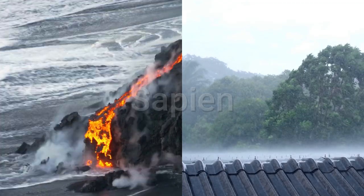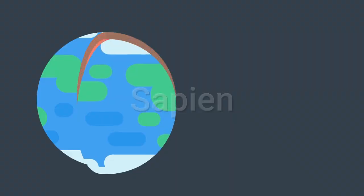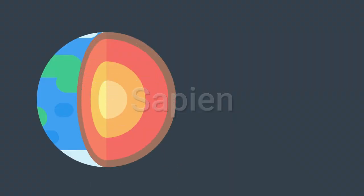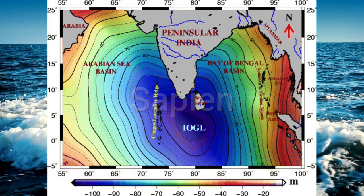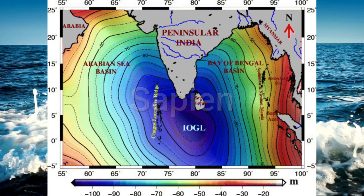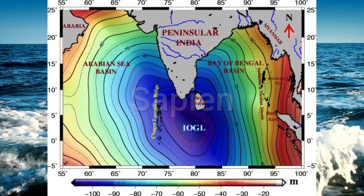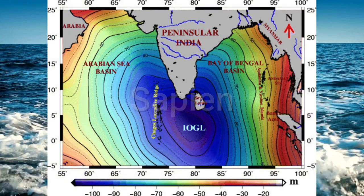From ancient oceans to modern day climate, from the planet's core to its surface, the Indian Ocean geoid low reminds us that our Earth is full of mysteries waiting to be unraveled. And who knows, the key to understanding our planet's past, and perhaps its future, might just lie in this massive gravity hole in the middle of the Indian Ocean.